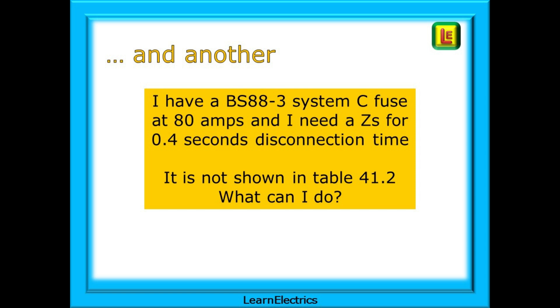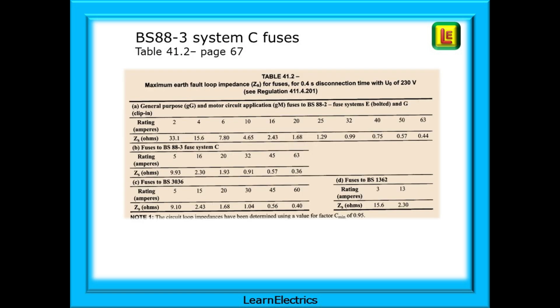Well, let's start by looking at this one. Look in the Brown regs book, and on page 67, you will find table 41.2. This table shows the tabulated ZS or earth fault loop impedance values for fuses that are required to disconnect in 0.4 seconds or less. If we look for BS88-3 system C fuses about halfway down the table, we see that the data stops at 63 amps. An 80 amp fuse does not exist on this table. So, what would the ZS be if we wanted it to operate in less than 0.4 seconds? And notice that the other fuses listed do not go past 63 amps either. Yet we know that bigger sizes are available. What can we do?